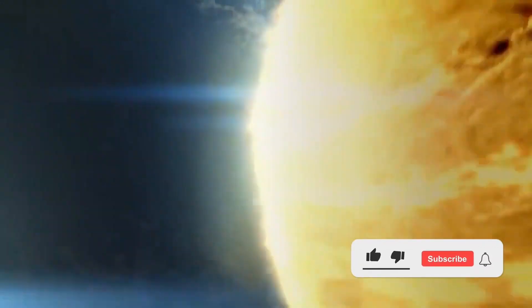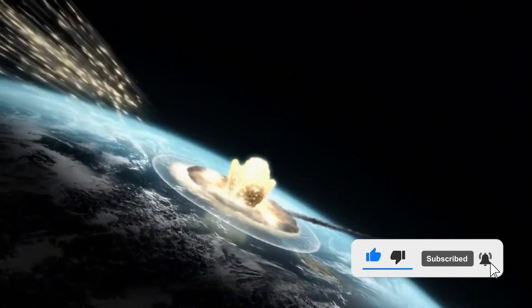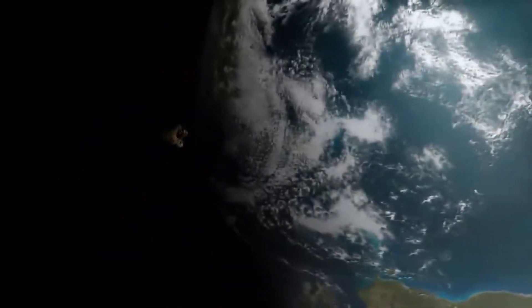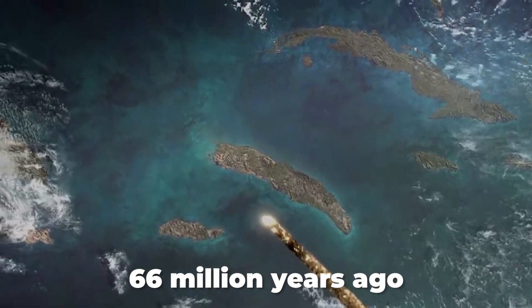We have already experienced at least five mass extinction-level events that might have eradicated thousands of species of animals, plants and sea creatures and at least one of them could be caused by an extraterrestrial agent like an asteroid that struck at the end of the Cretaceous period about 66 million years ago, which was responsible for wiping out dinosaurs.